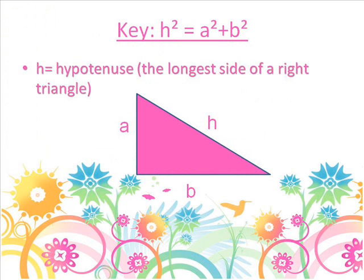To start the problem, we have to know the key vocabulary. In this drawing, we see a right triangle with h, a, and b. h is the hypotenuse, or in other words, the longest side of a right triangle.